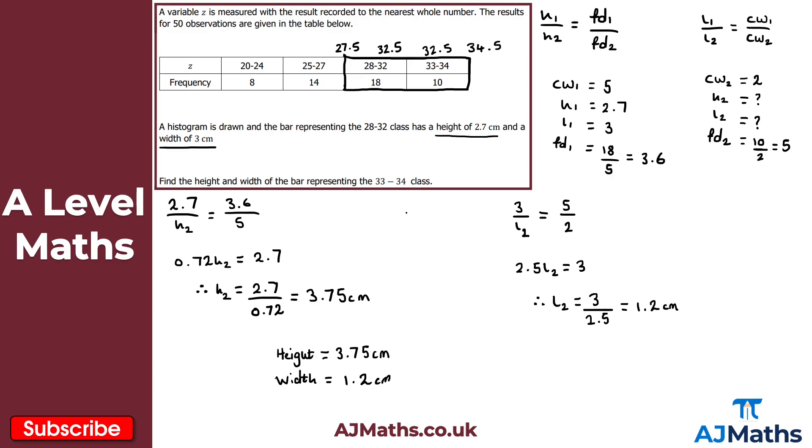You can, if you want, draw a diagram of the histogram. I don't think it's necessary for questions like this, but if you do find that helpful, feel free to do that. But there we have it. So you should get 3.75 centimeters for the height and 1.2 centimeters for the width there. And that's the end of this video on histograms.